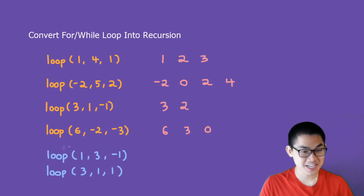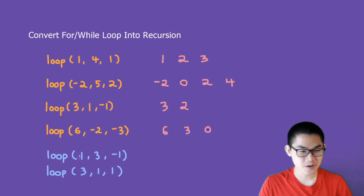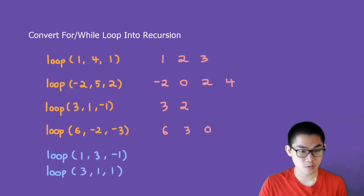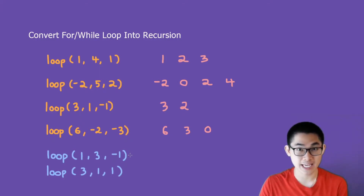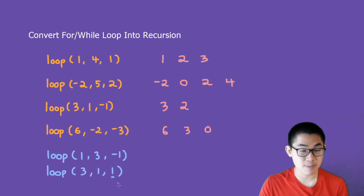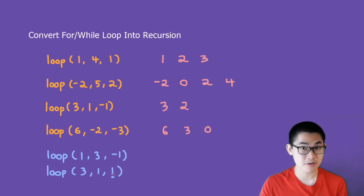And how about these ones down here? These are invalid cases. So if you put 1, 3, and minus 1, then it doesn't make sense, because you want to go from 1 to 3, so this number has to be a positive number. In this case it is a negative number, so we don't do anything here. How about this one? We want to go from 3 to 1, so this number must be a negative number. But if this is a positive number, then we don't do anything here as well.